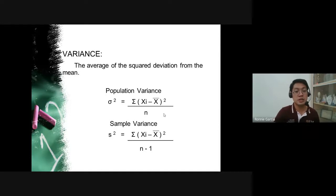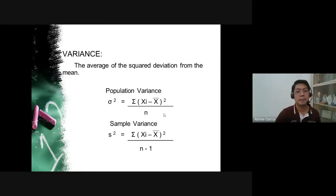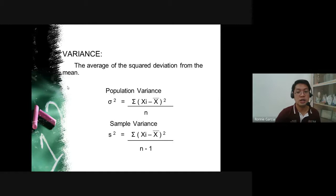Let's proceed to the third measure: variance. Variance is the average of the squared deviation from the mean. Comparing with the mean deviation formula — which used absolute value — the variance formula uses squared deviation instead. The formula for sample variance is: s² = Σ(x_i − x̄)² / (n − 1). The denominator is n − 1 because we are dealing with a sample, not the entire population.